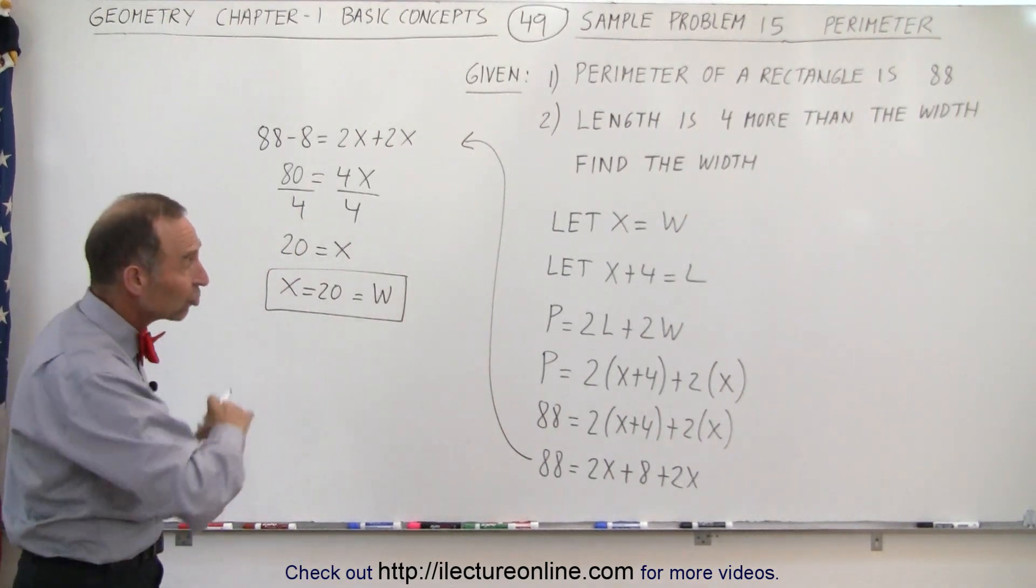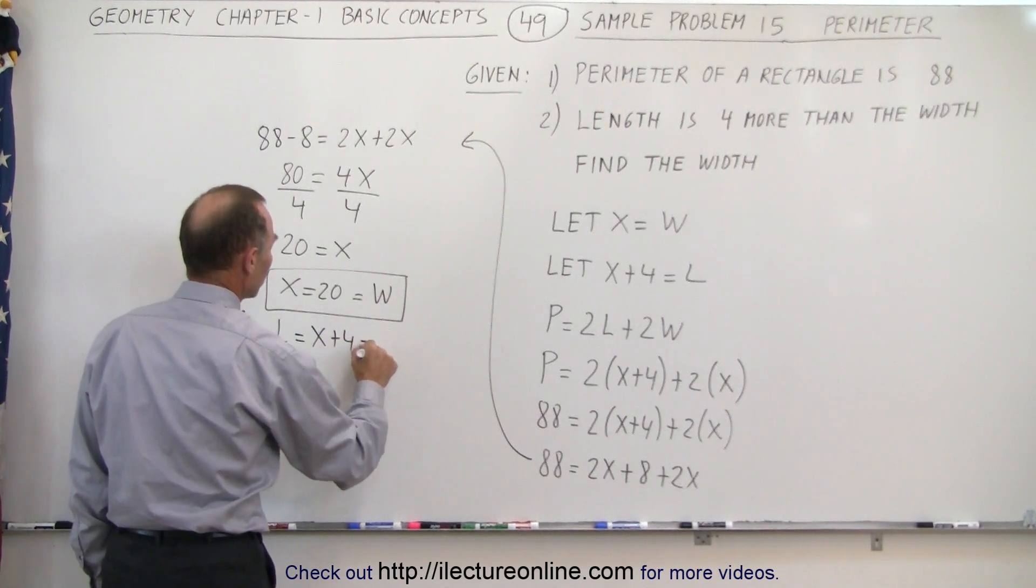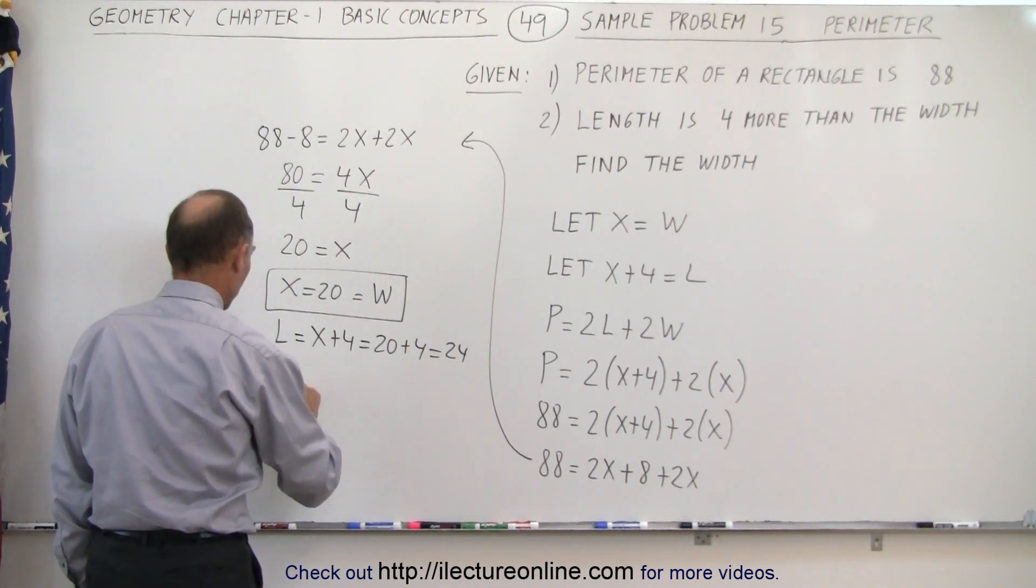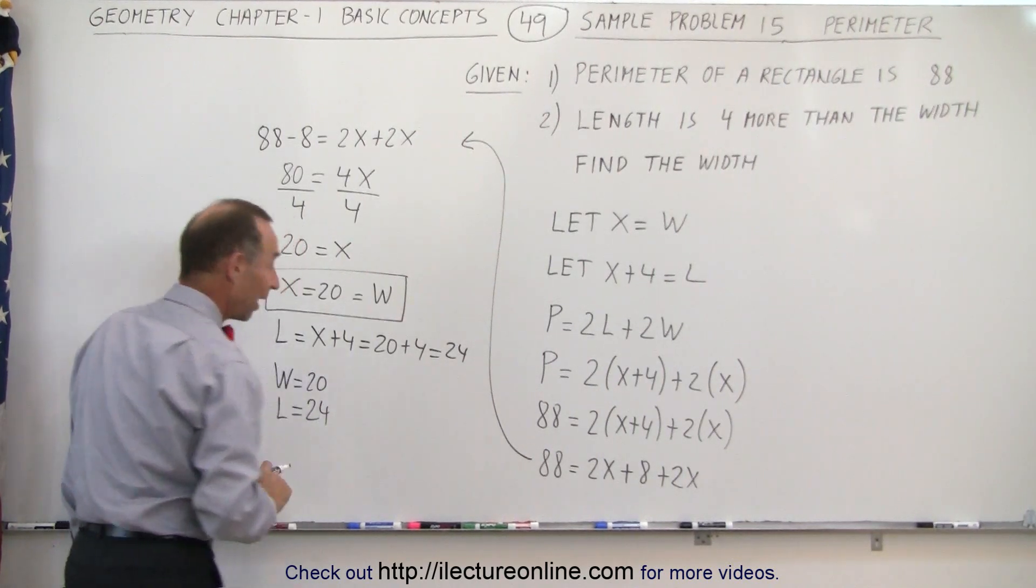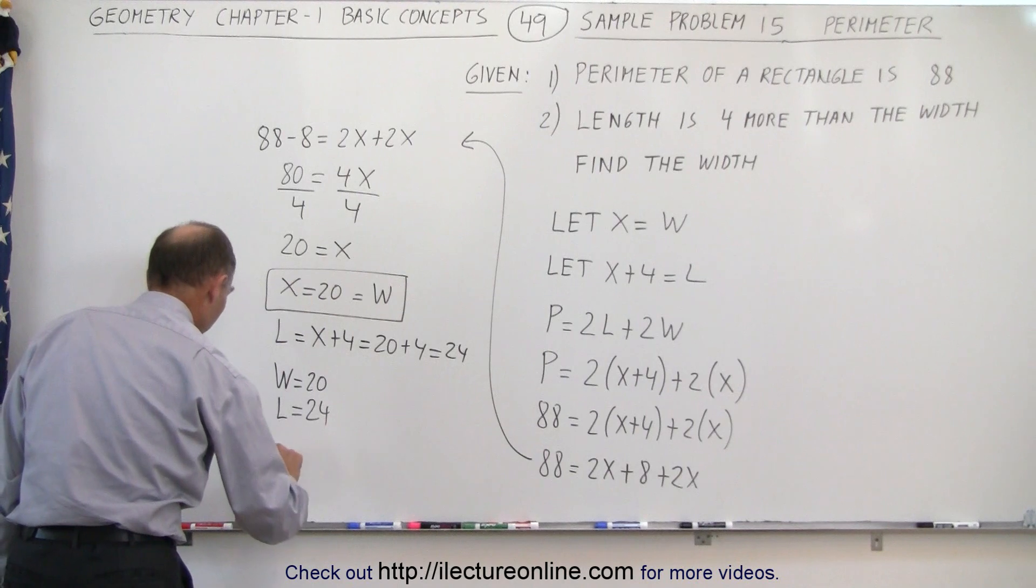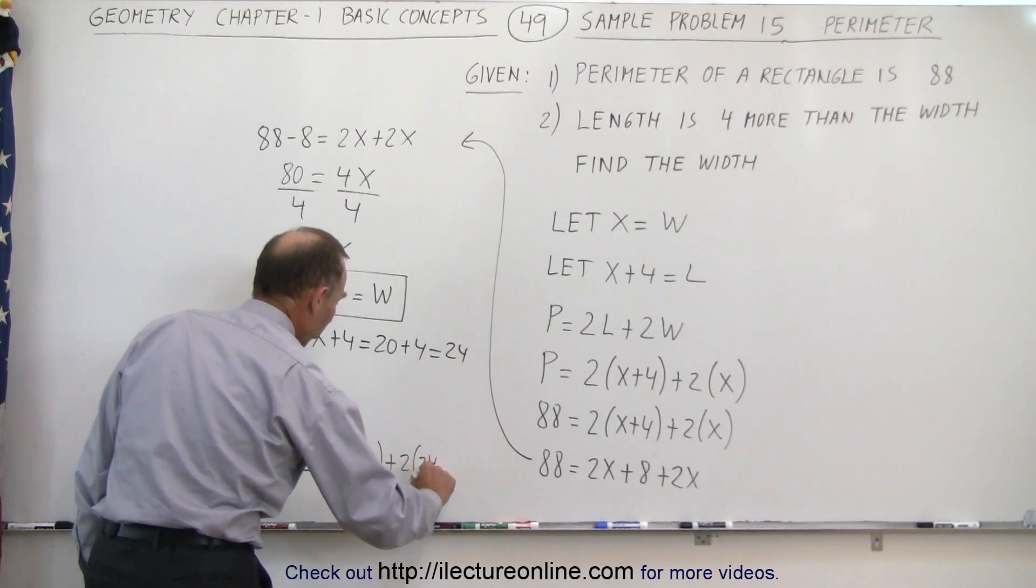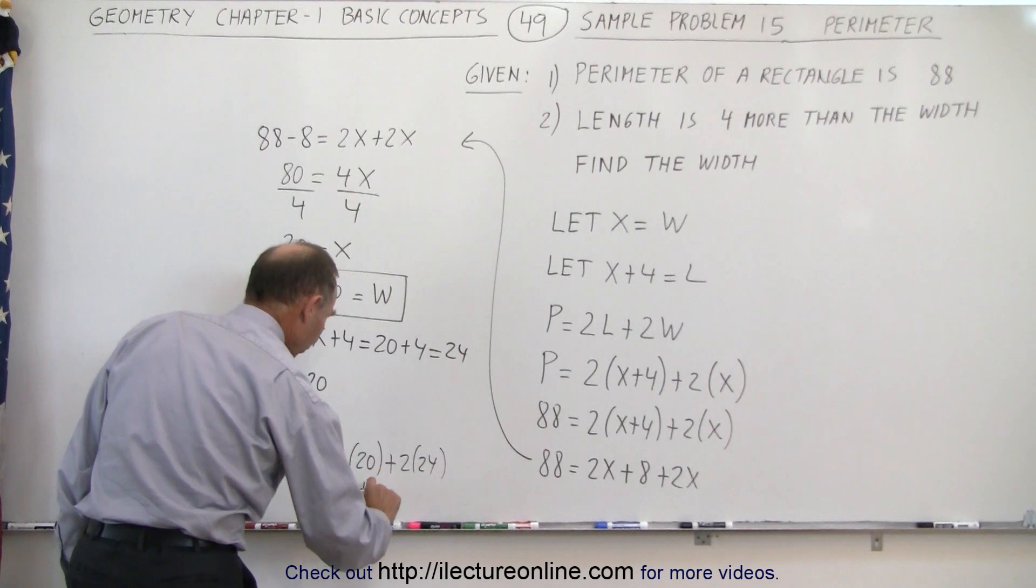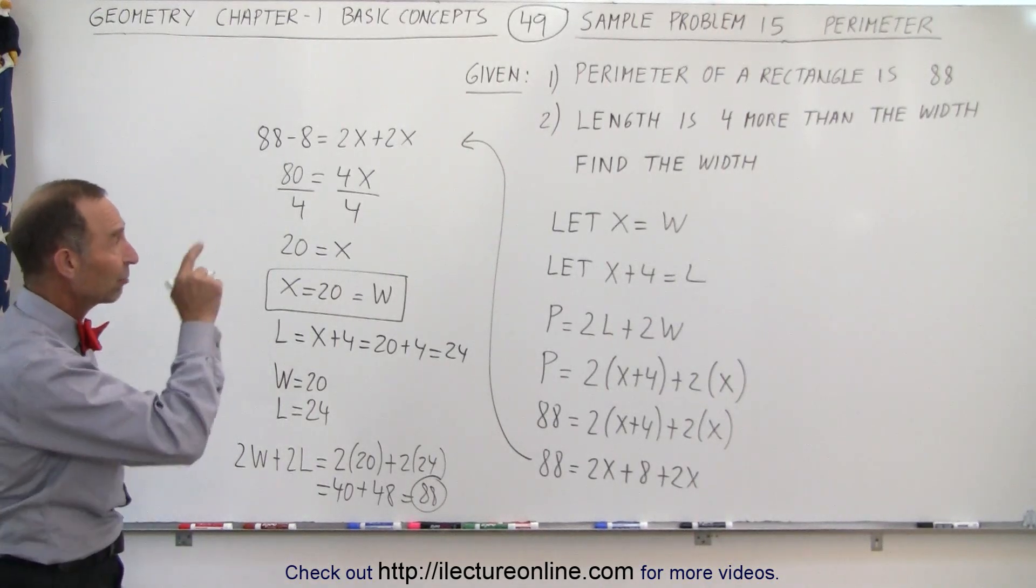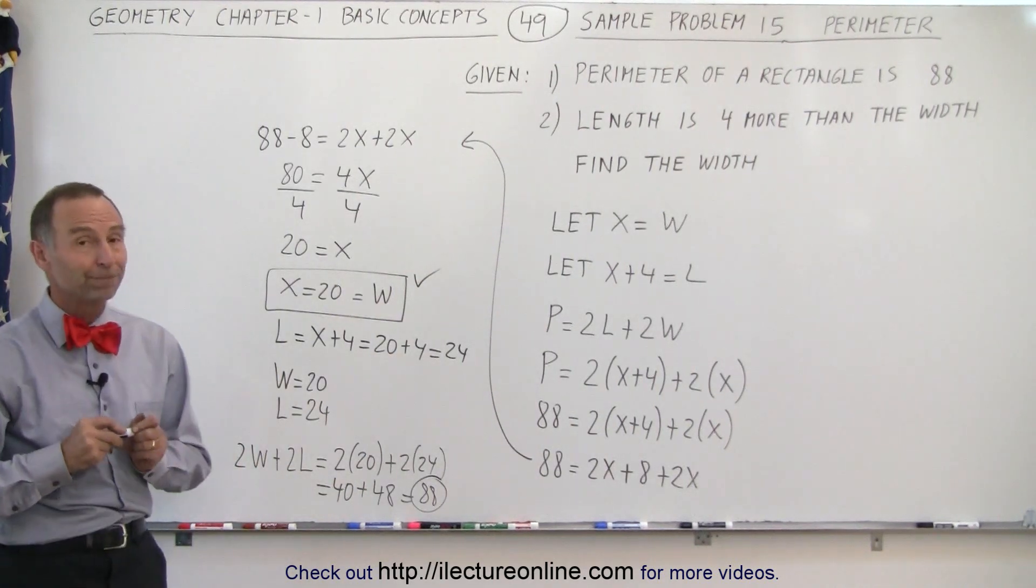Now let's see if we get this correct by checking our answer. If the width is equal to 20, then the length which is equal to x plus 4 should be equal to 20 plus 4, or 24. So the length is 24, the width is 20. Now let's go ahead and find the perimeter using these numbers to see if they add up to 88. So 2 times the width plus 2 times the length is equal to 2 times 20 plus 2 times 24. That's equal to 40 plus 48 which is equal to 88, and of course that's what we expected if the answer was correct. It adds up to 88, which means that the width is indeed 20 and the length is indeed 24. And that's how it's done.